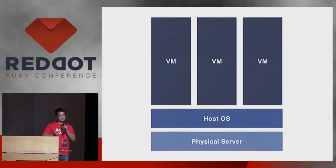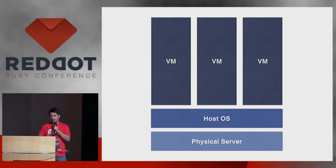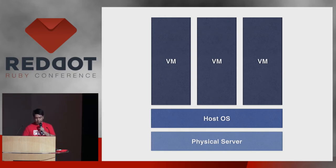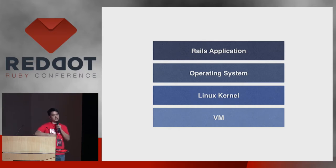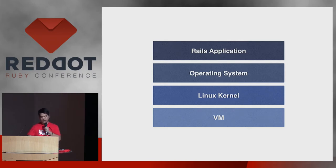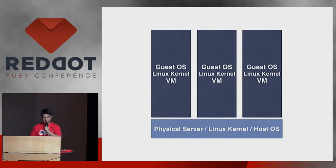Talking about VMs — this is, for example, your physical server, and then you have your host OS. If you have servers on Amazon or DigitalOcean, you are paying for a VM, and someone else could be using another VM on the same server. Looking into the VM, it has its own Linux kernel operating system, and then you would put your Rails application on it. So the symlink releases are all inside one VM. You have your physical server, your own OS, and then your VM which could have its own OS.